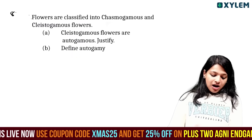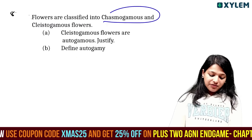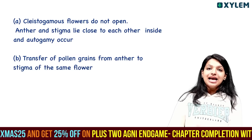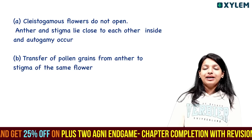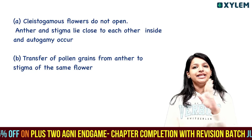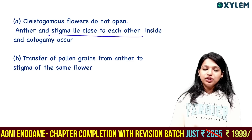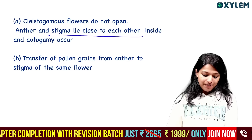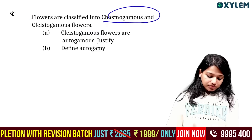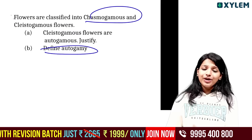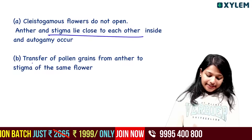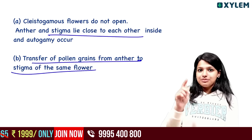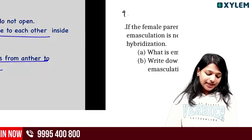Flowers are classified as chasmogamous and cleistogamous. Cleistogamous flowers do not open; anther and stigma are close to each other. Autogamy transfers pollen from anther to stigma of the same flower.